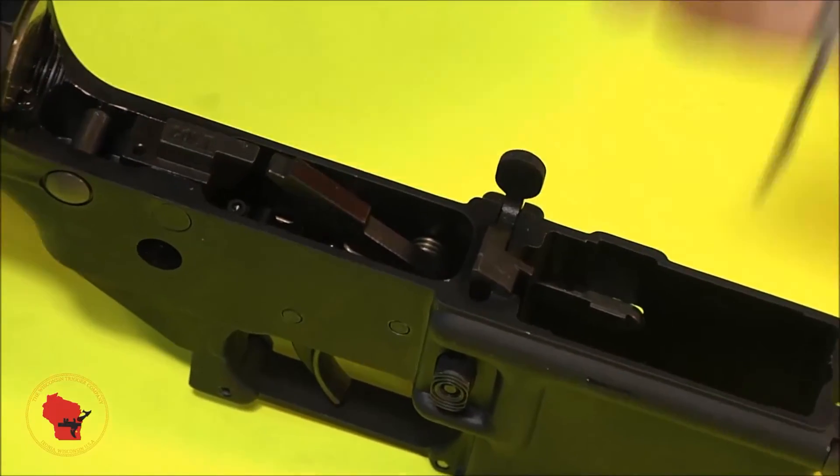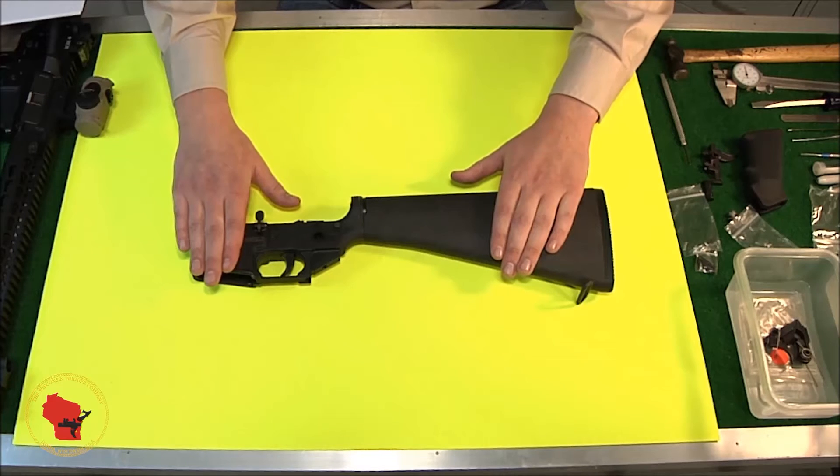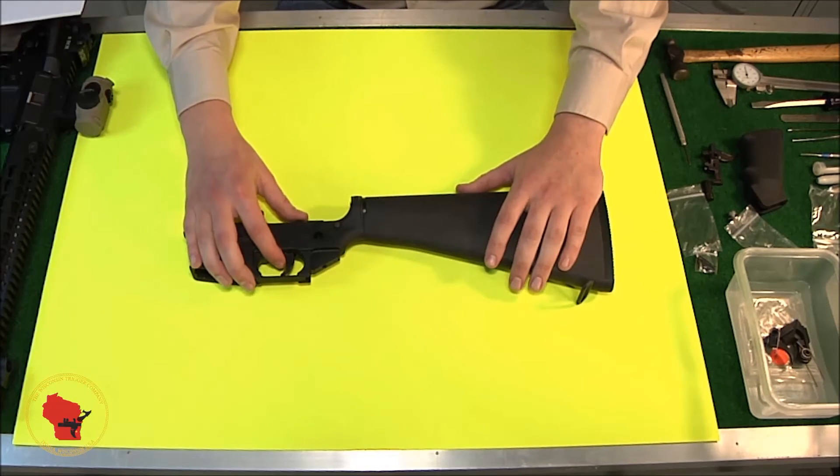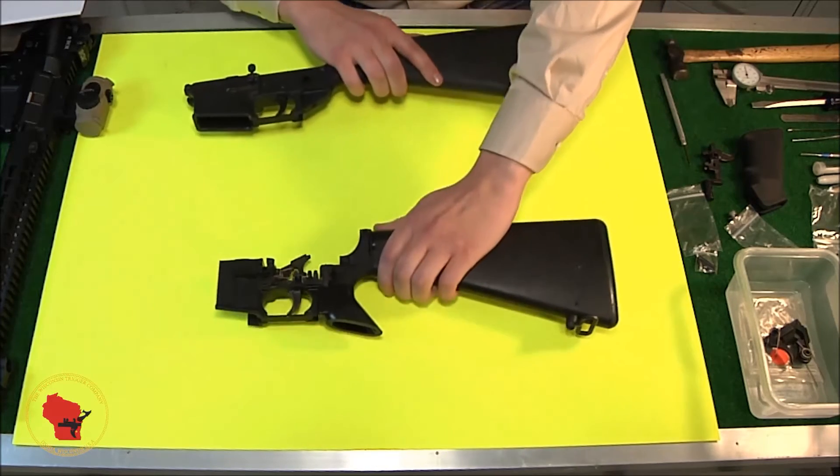But first, grab your Allen wrench. All right. So we got that installed in the receiver here. For this next part, we're going to start setting the disconnector for second stage. I'm going to switch to something that's going to be a little bit easier for you to see what I'm doing here.